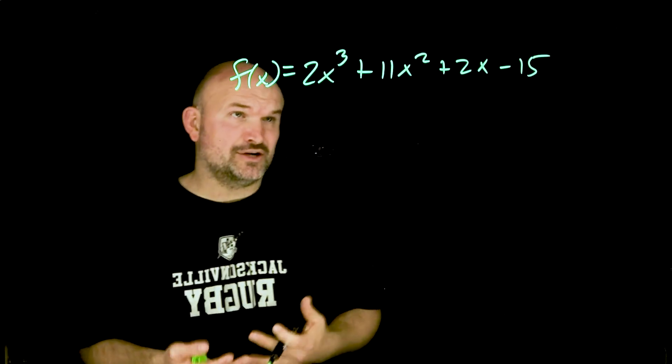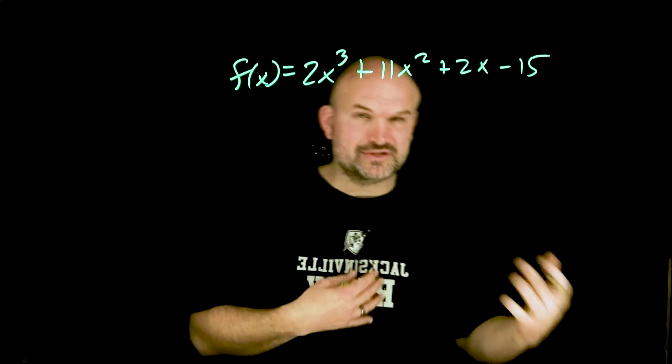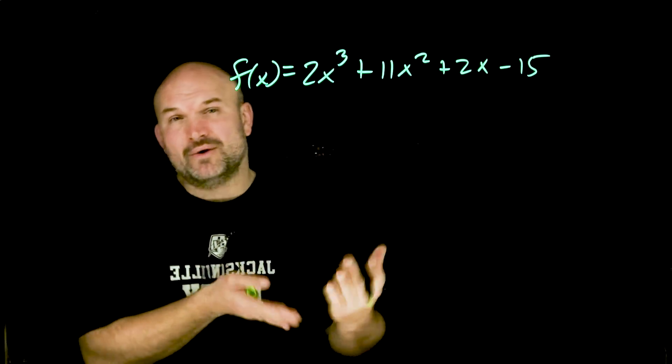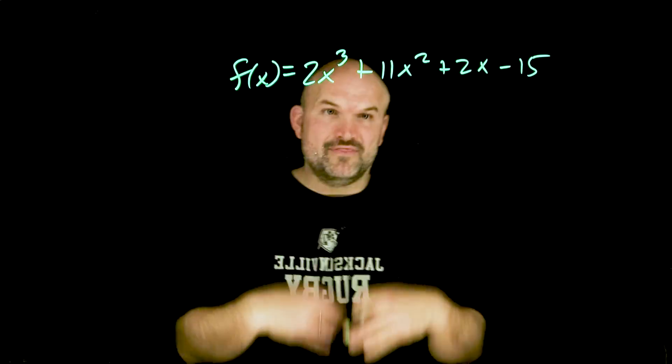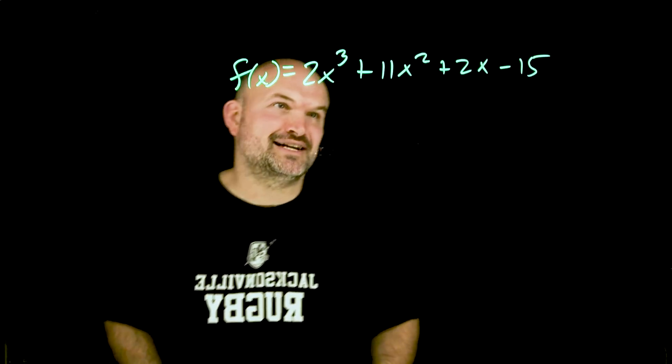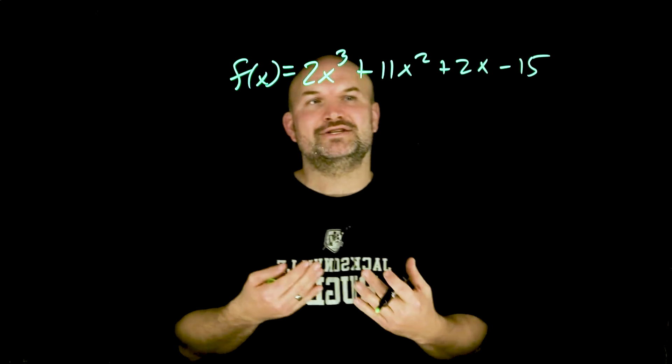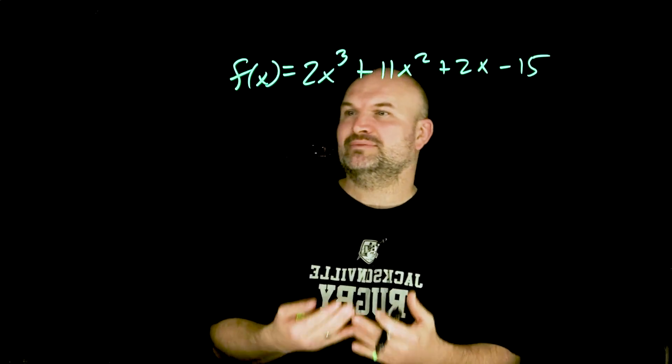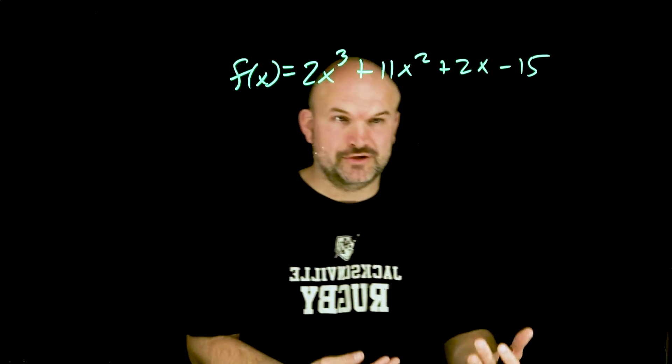If I had a calculator or graphing technology like Desmos I might just graph it and identify a zero. Then once I know a zero I can use synthetic division. Unfortunately I don't have graphing technology and I'm putting myself into the picture of let's say this was a problem that I was given on a test without a calculator. What would I do?